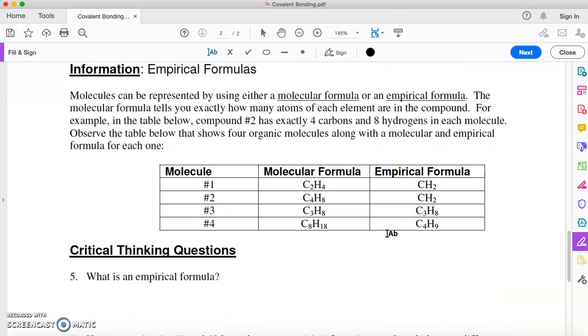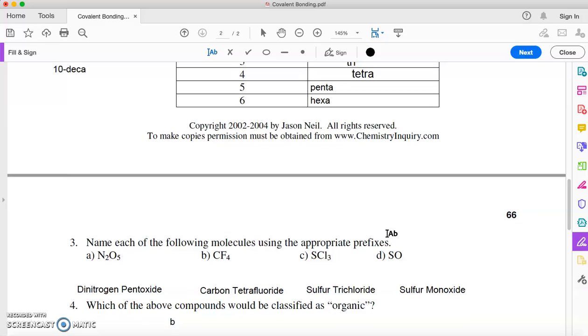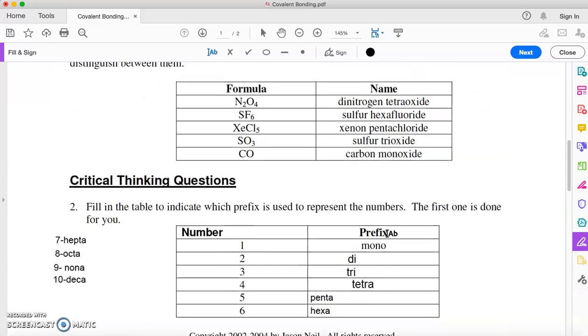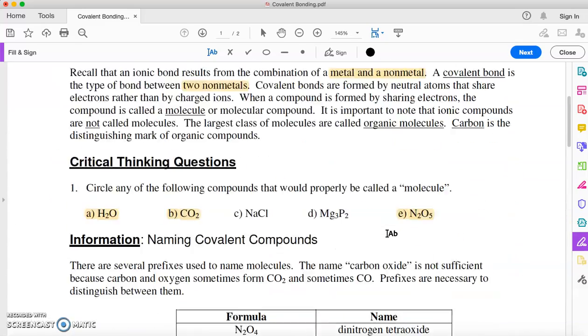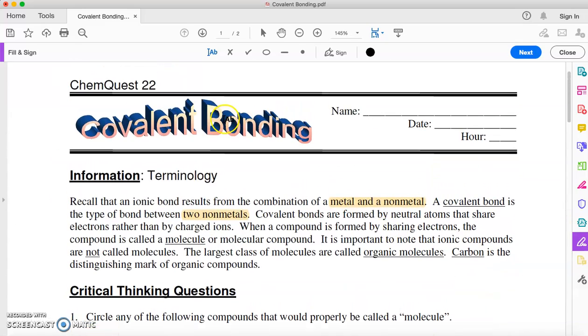Empirical formulas, that is something we will pick up at a later date, but I want to make sure that we have the covalent naming down. So please do the practice that goes along with this sheet, and we will pick it up from there. Thank you.